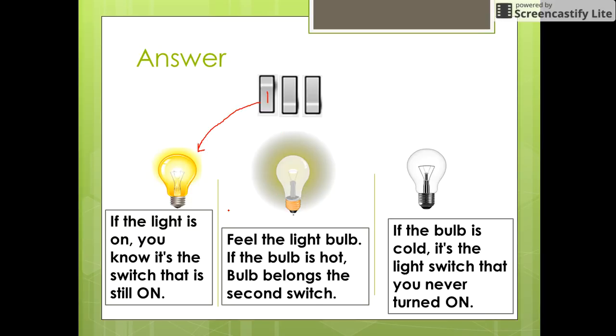Now if the light is not on, feel the light bulb. If the bulb is hot, the bulb would belong to the second switch, because you turned off the second switch after 10 minutes and the bulb would have got heated up when it was lit for 10 minutes.